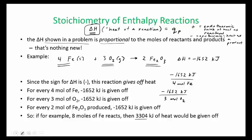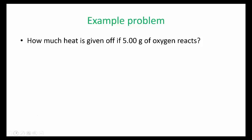All right, so let's try a problem using this reaction. So how much heat is given off if 5 grams of oxygen reacts? So let me rewrite my balanced chemical reaction. And delta H was negative 1,652 kilojoules. So if I have 5 grams of oxygen, how much heat is given off?